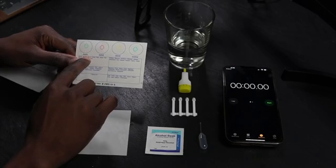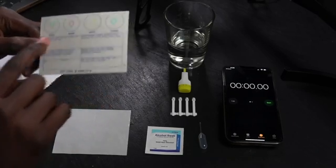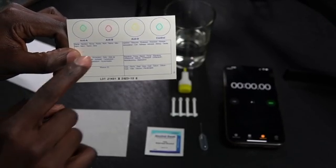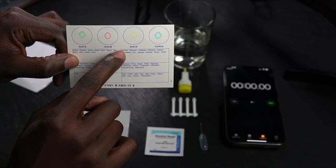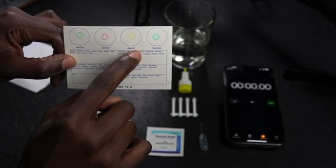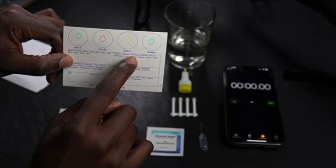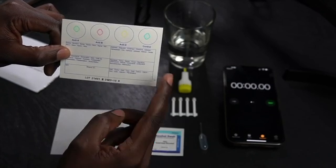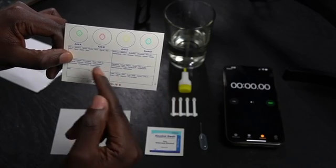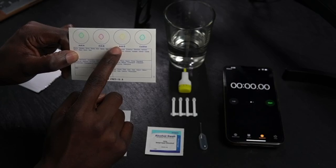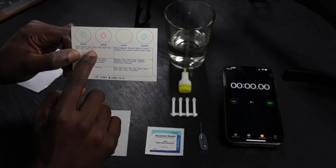In this one you can see we have the anti-A antibodies. Maybe if I bring it closer. There you go, anti-A antibodies, anti-B antibodies, anti-D antibodies. This is the one for determining if you're RHD positive or negative. And then we have the control. It basically contains all of the same stuff that we're using in all of the others, except that it doesn't have any actual antibodies. The idea is that if you see agglutination in any of these, it tells you that the antigens for these antibodies are present.